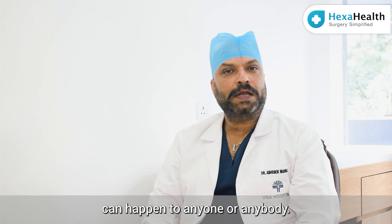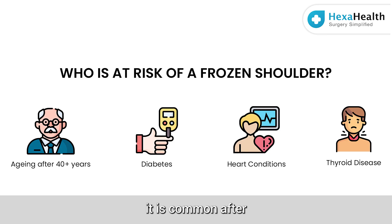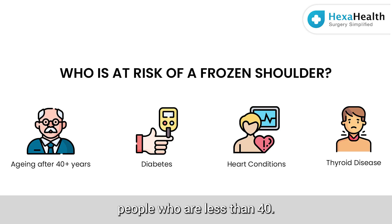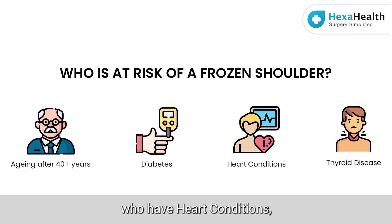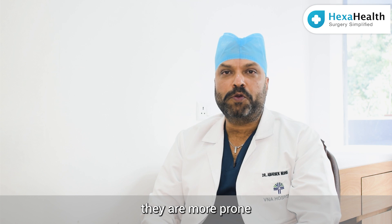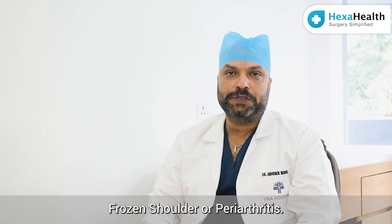Frozen shoulder can happen to anyone, but generally it is common after the age of 40 — it usually doesn't affect people younger than 40. It can happen on one side or on both sides at the same time. People who have diabetes, thyroid issues, or heart conditions are more prone to getting this condition called frozen shoulder or periarthritis.